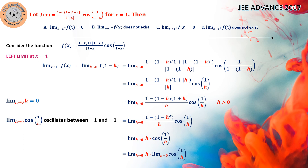As h becomes smaller and smaller, the argument of the cos function is actually 1/h, which changes rapidly. So the amplitude and how many times it crosses zero will change — that is based on amplitude and argument. So it will be oscillating between minus 1 and plus 1, and doesn't exist directly. But since 0 is multiplied here, it is 0 multiplied by an oscillating value — that gives us 0. So this limit will exist and the value will be 0. Therefore the left limit exists and equals 0, and that's why option A is definitely the correct option.